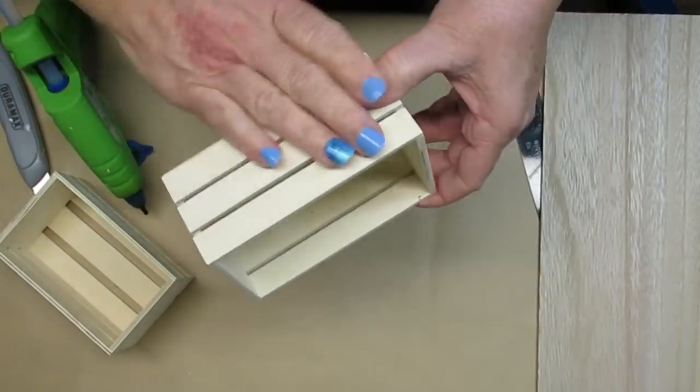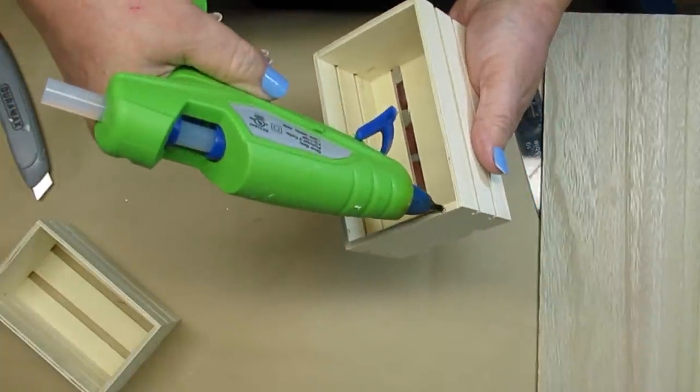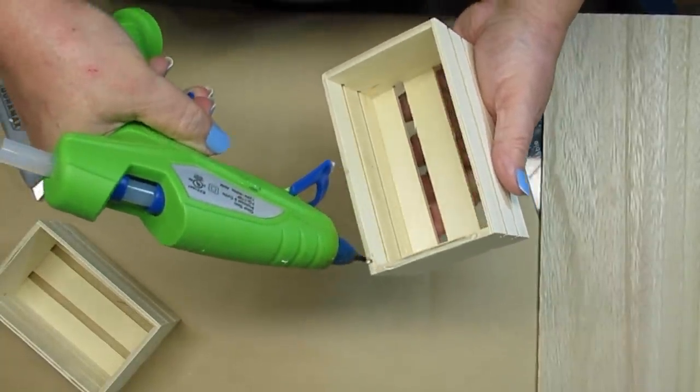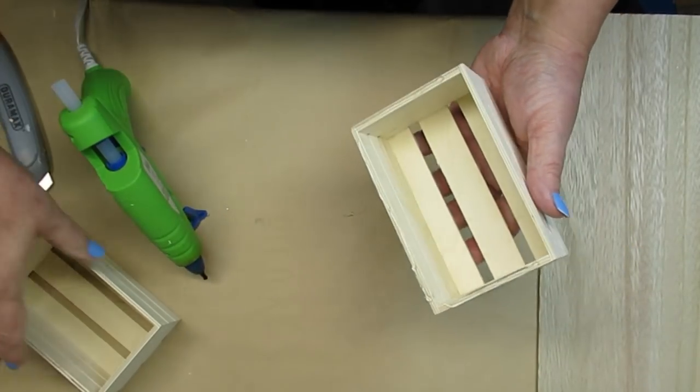I'm going to use two of these little Dollar Tree crates and I'm going to glue them together. So I'm just going to add some hot glue to the one top here and then I'll just put the other one on top and glue them together really well.